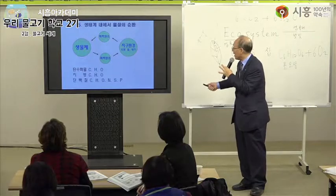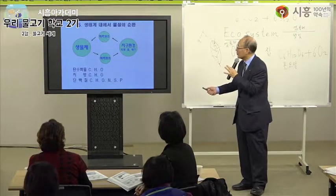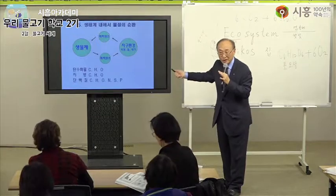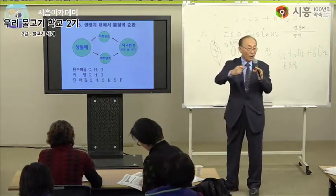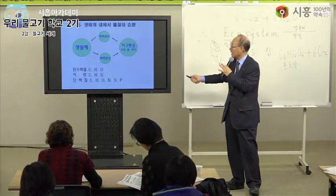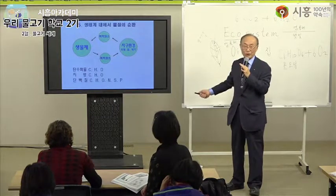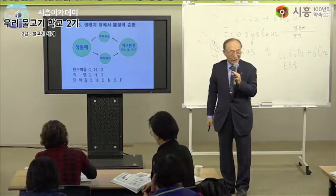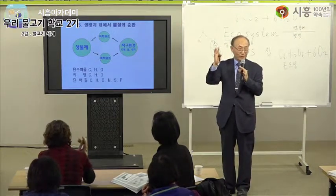이런 화학원소는 다시 물속, 공기 중에 들어있다가 식물 뿌리로 들어갑니다. 토양이나 물이나 대기 중에 들어있다가 다시 화학원소 상태로 식물체 뿌리에서 흡수되기도 하고, 그 식물을 먹고 사는 동물의 몸속에 들어가기도 합니다. 이것들은 빠져나가지 않고 빙빙 돌고 있습니다. 생물체에서 무생물체로 왔다가 화학원소로 됐다가 다시 생물체로 들어오는 이것이 물질의 순환입니다.